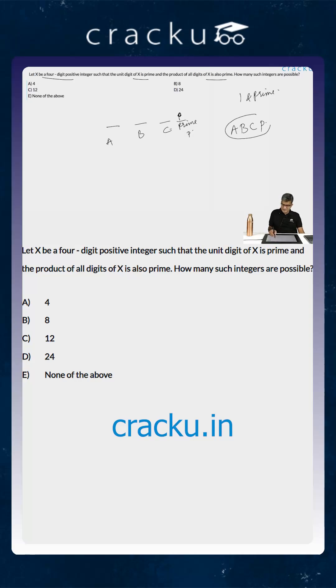If you are told that this itself is prime, the only possibility for that to happen is a is equal to, b is equal to, c is equal to 1. That is the only way in which this product a, b, c, p will be a prime number.